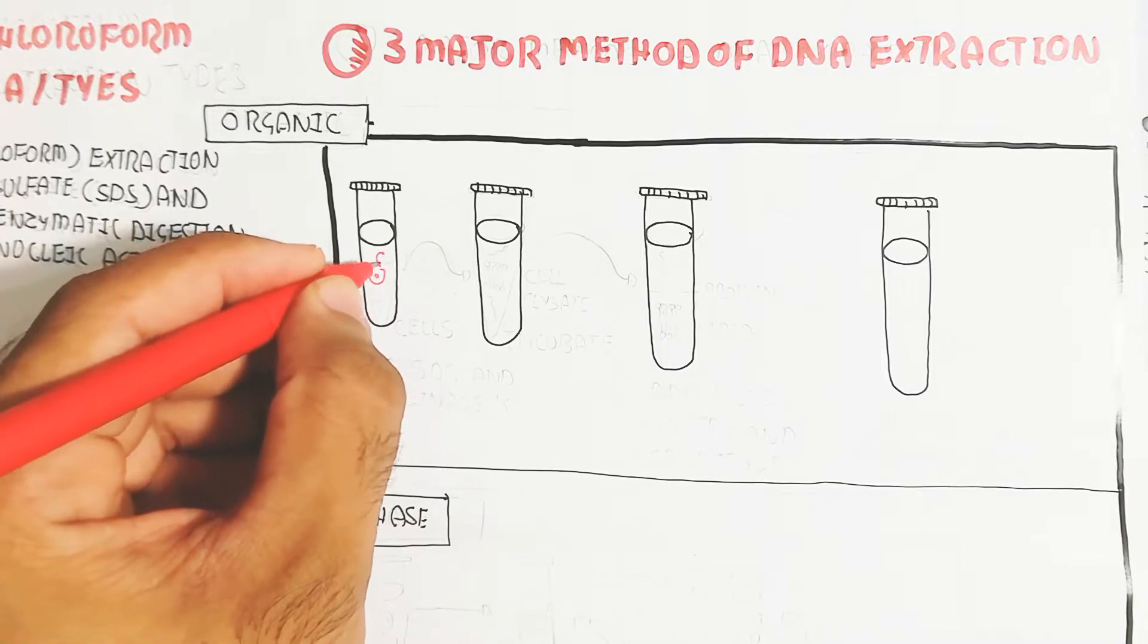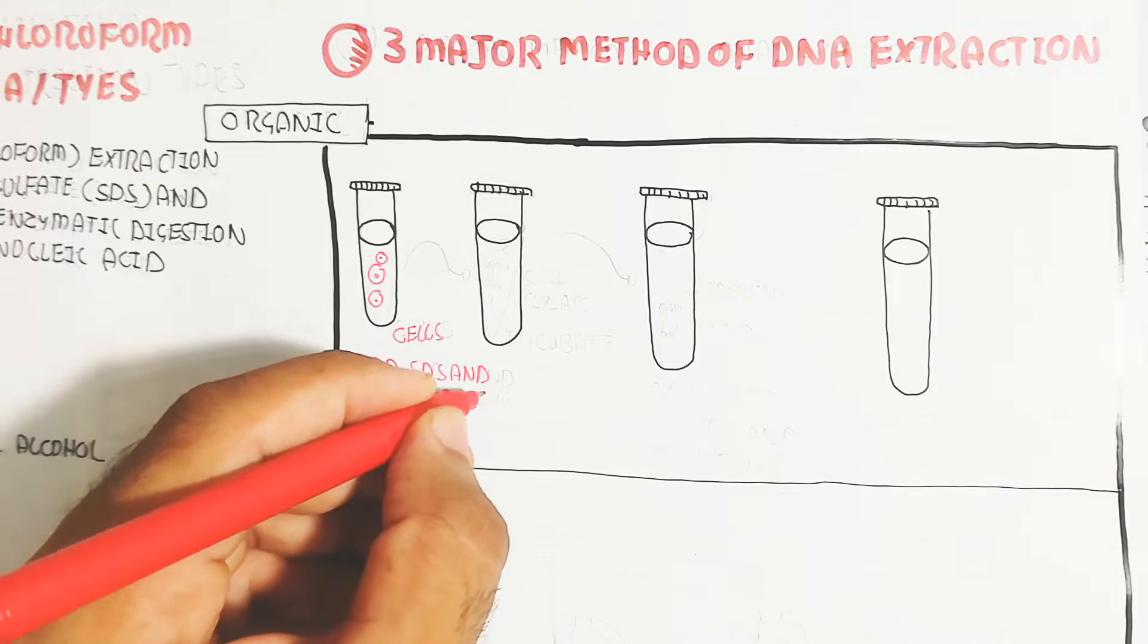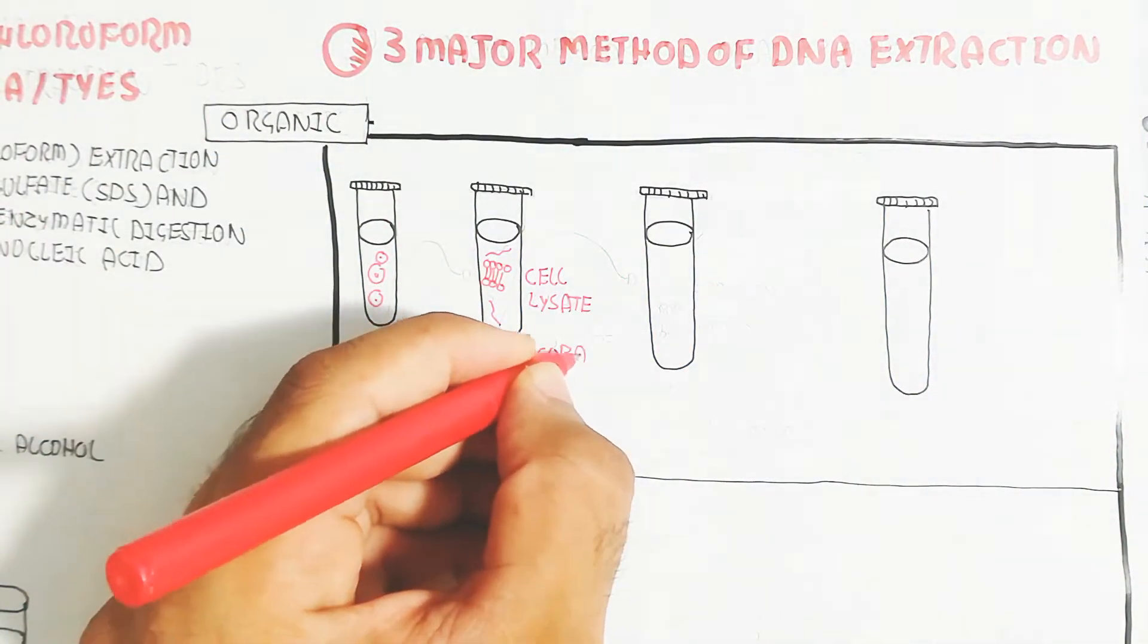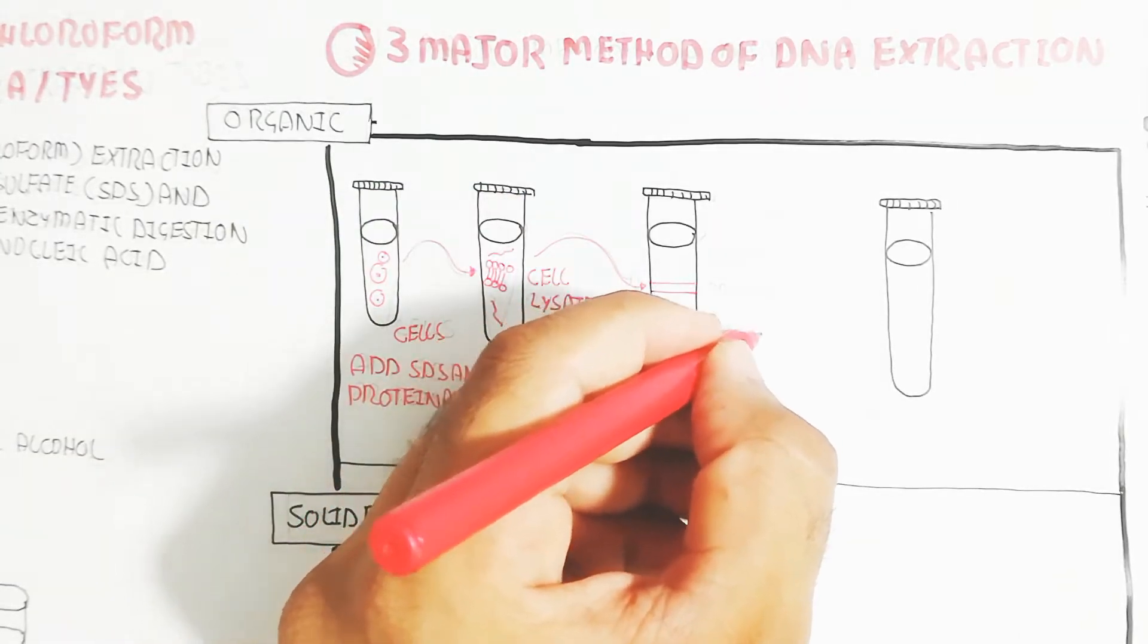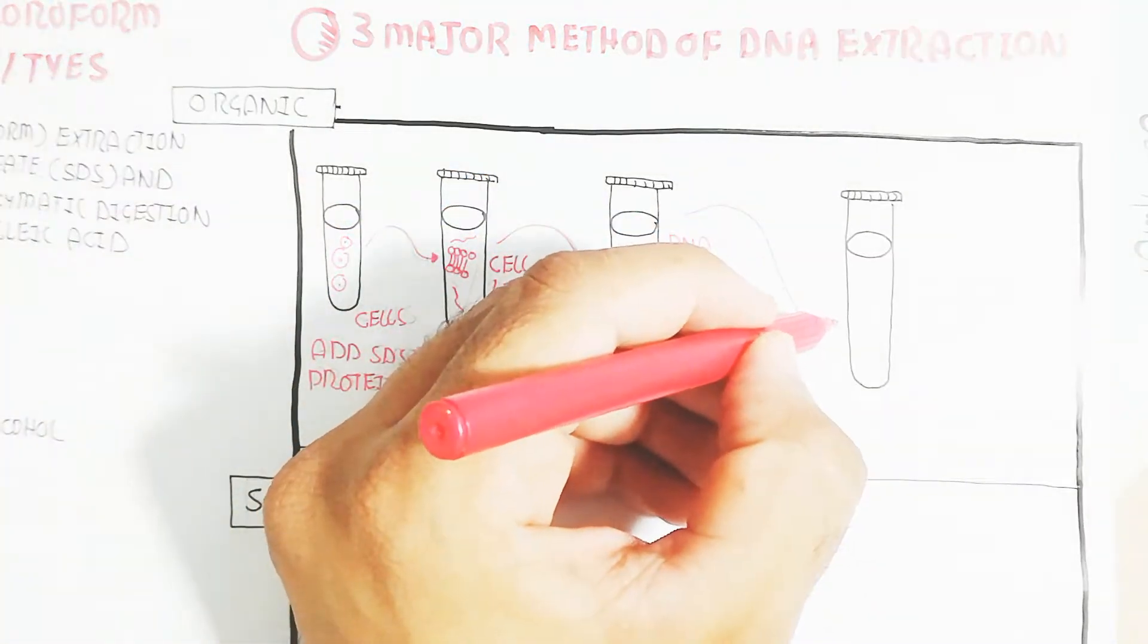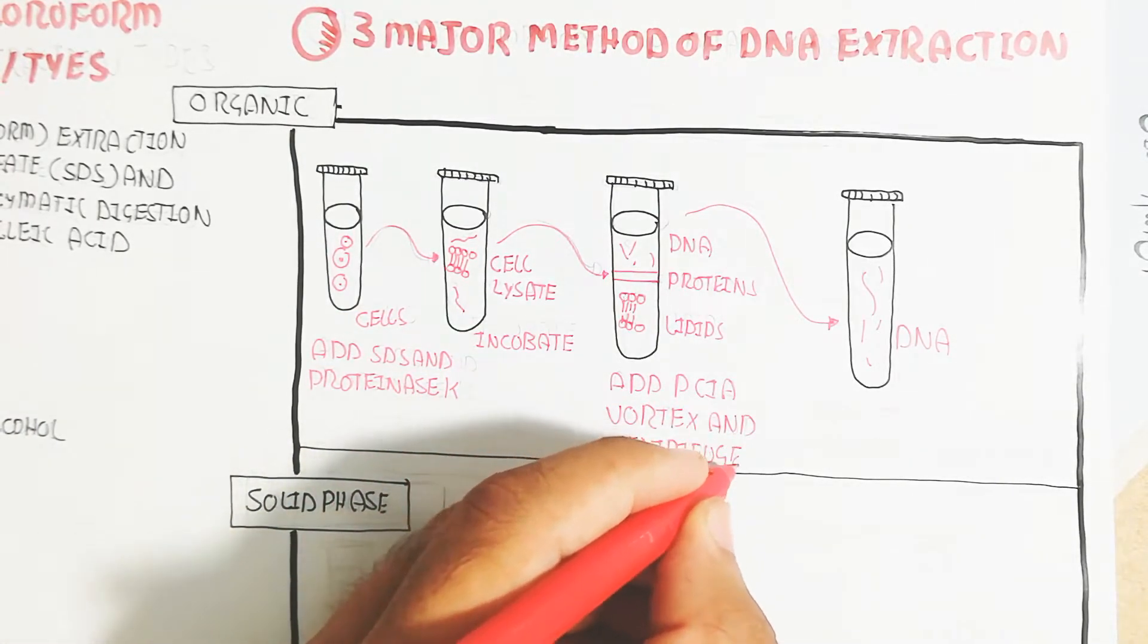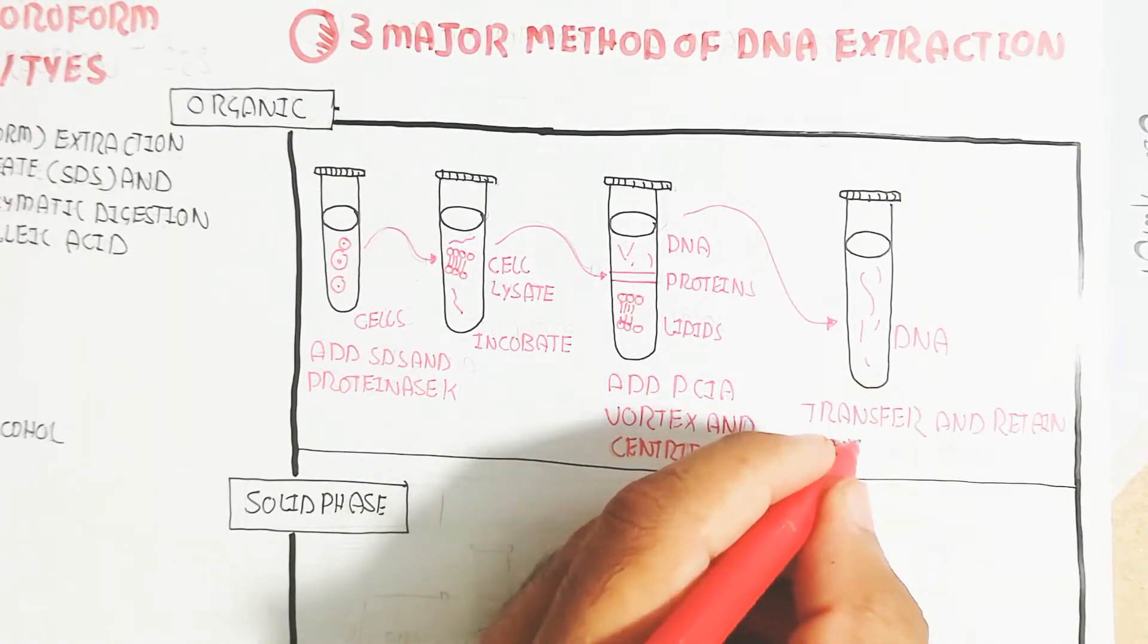The major organic method is to add SDS and proteinase K - the sodium dodecyl sulfate. The cells containing sample undergoes cell lysis and incubation. After incubation, the DNA, proteins, and lipids separate into layers. Add PCI and vortex and centrifuge. After separation, transfer and retain the aqueous phase DNA.